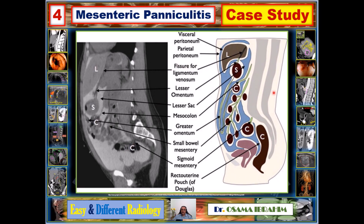In these diagrams and sagittal CT images, the mesentery can be identified through several landmarks. The visceral and parietal peritoneum appear as two lines anteriorly. The fissure for the ligamentum venosum can be seen with contrast injection or in cases of massive ascites. The lesser omentum represents an extension of this fissure, and the lesser sac lies posterior to the stomach.